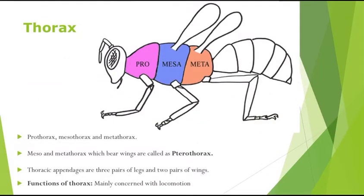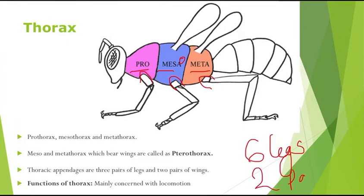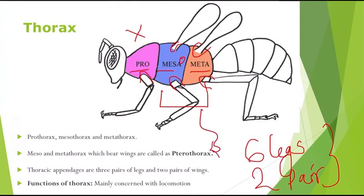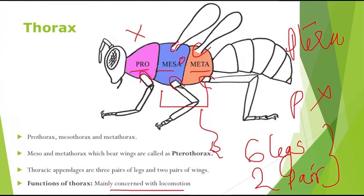The next tagmata is the thorax, which has three segments: pro-, meso-, and metathorax. Each of these will have one pair of legs, giving the insect six legs in total. An insect also has two pairs of wings, which are present only on the meso- and metathorax — not on the prothorax. The meso- and metathoracic segments together are called the pterothorax, because 'ptera' means wing. The thorax is mainly concerned with locomotion.